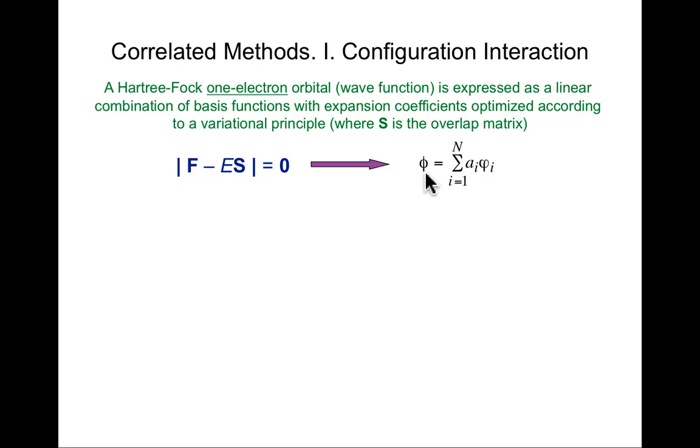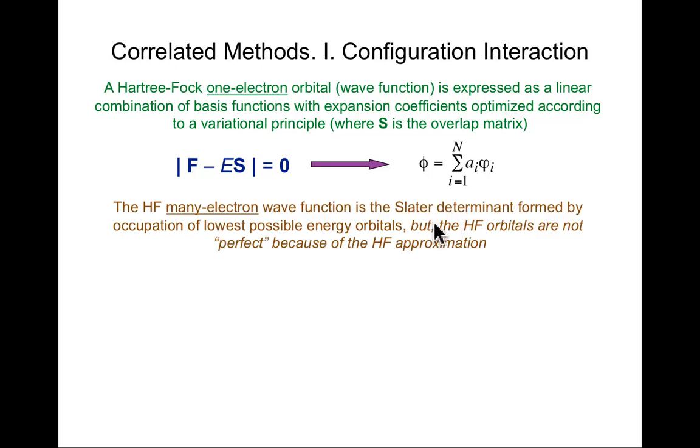The Hartree-Fock wave function, the many-electron wave function, is the antisymmetrized product of the occupied molecular orbitals, where we simply occupy orbitals until we run out of electrons, starting at the lowest energy and going up.